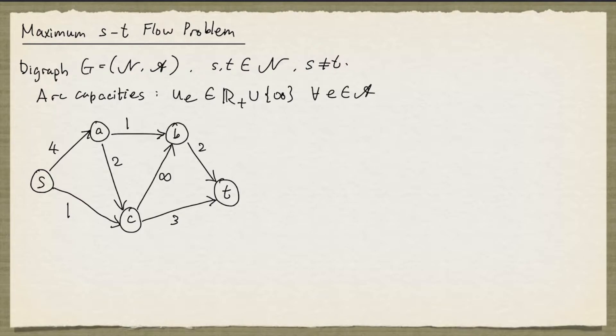We're interested in s-t flows. An s-t flow is a vector x with entries indexed by the arcs, satisfying the following: For each arc, the flow value on that arc is at least 0, and at most the arc capacity. And it has to satisfy what is known as flow conservation.